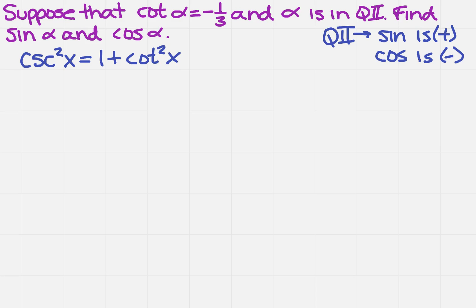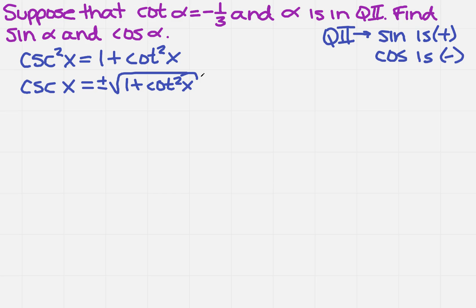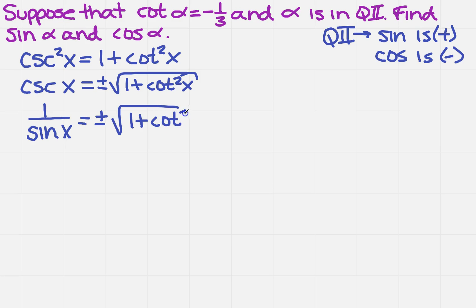Now, if I just had the cosecant of x, I could write that in terms of sine, but I don't. So I'm going to take the square root of both sides. Taking the square root of the left side, I get the cosecant of x equals plus or minus the square root of 1 plus the cotangent squared of x. I know that the cosecant of x is the same thing as 1 over the sine of x, and that equals plus or minus the square root of 1 plus the cotangent squared of x.